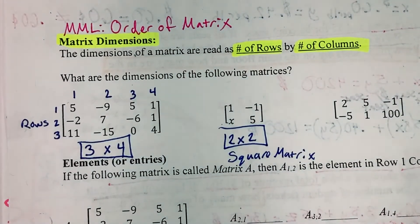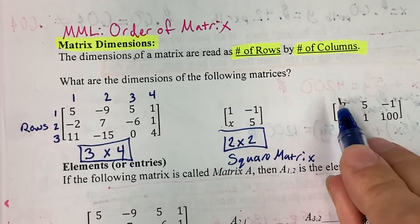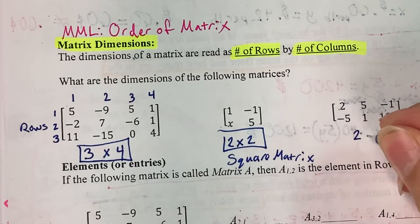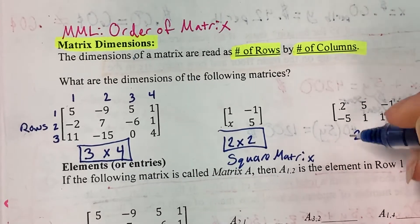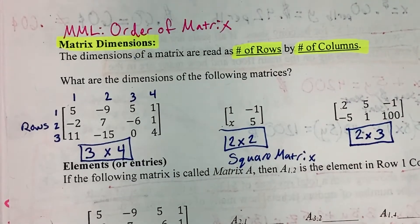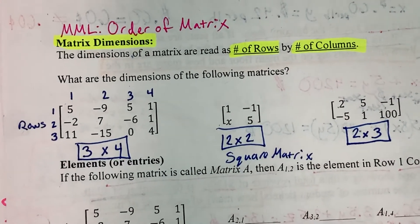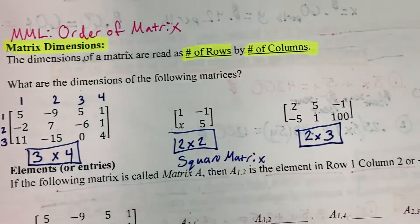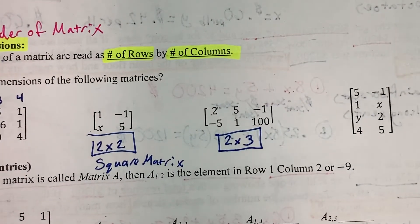The next one is a 2 by 3 matrix. And what we're going to find is when we start doing matrix operations, the dimensions are super important for whether we are allowed to do an operation or not. On your own, go ahead and pause the video and try the last one.